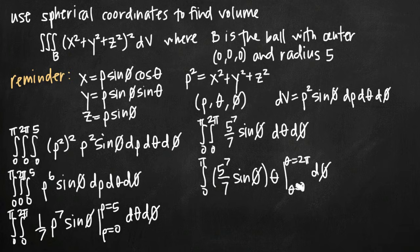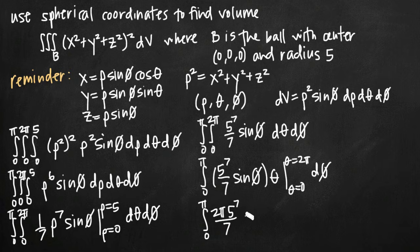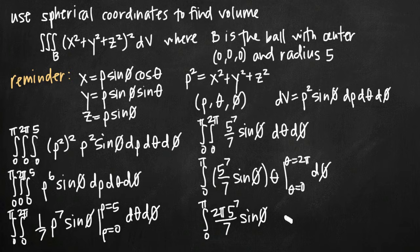Evaluating from theta equals 0 to theta equals 2pi, plugging in 2pi gives 2pi times 5 to the 7 over 7 times sine of phi. Plugging in 0 gives zero, so that term cancels. The result is 2pi times 5 to the 7 over 7 times sine of phi, with d phi remaining.